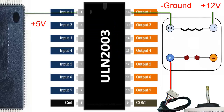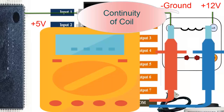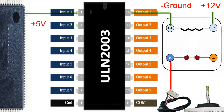The failure may also be in the relay. Perform the following steps: with the board disconnected, measure the continuity of the relay coil — if there is no continuity, the relay must be changed. If the coil is not energized, the switch must be open, and there should be no continuity on the relay's output pins.